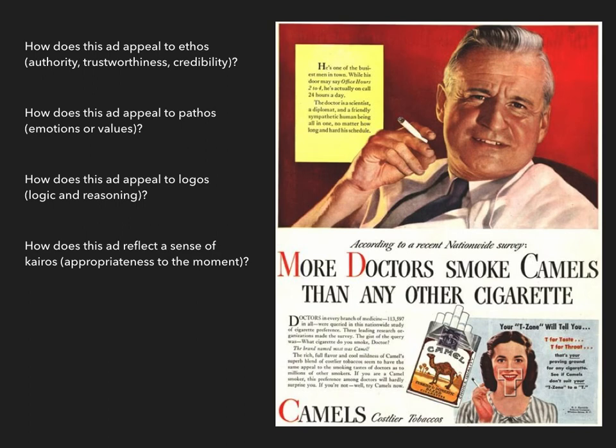What about logos? We've already mentioned the survey, but it's worth thinking about how it specifically draws the audience to the conclusion it wants. The first point it makes is that when doctors are asked what cigarettes they smoke, the brand named most was Camel. Then it describes Camels. There's an implied logic here: if doctors like Camels, there must be a good reason, and here are some features that might be why — the flavor and mildness.